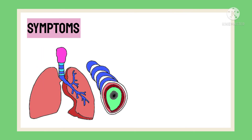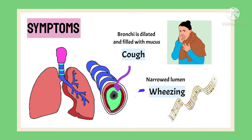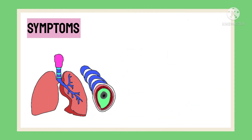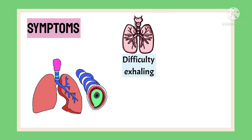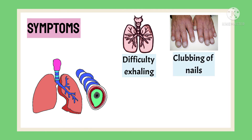As already discussed, the bronchi are dilated and filled with mucus, which causes chronic cough in the patient. Wheezing or a whistling sound is produced in the airways as the lumen is narrowed, and the person suffers from shortness of breath. The patient usually has more difficulty exhaling than inhaling. The fingernails may curve downwards as the tissues under the nails become thicker due to lower oxygen concentration — this is called clubbing of the fingernails.